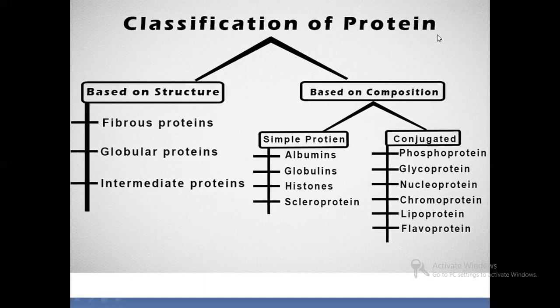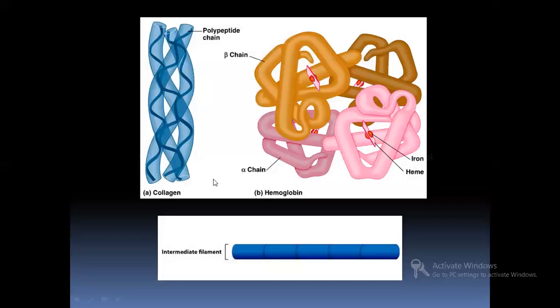Next, classification of proteins. Proteins are classified on three bases: first based on structure, second based on composition, and third based on biological function. Based on structure, proteins are classified into three classes: fibrous proteins, globular proteins, and intermediate proteins. Examples include collagen as a fibrous protein, hemoglobin as a globular protein, and intermediate filaments.